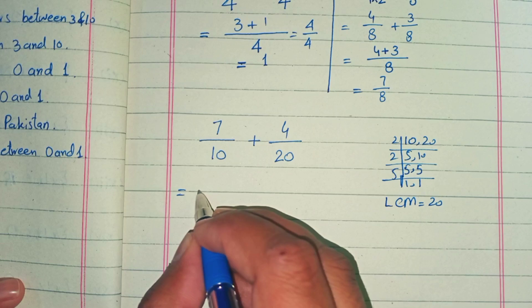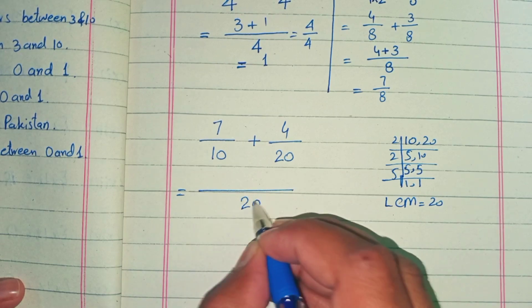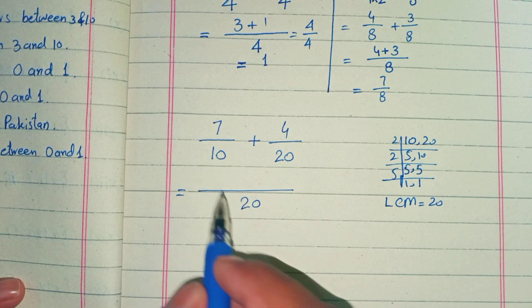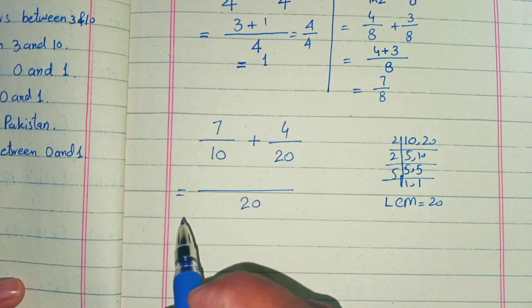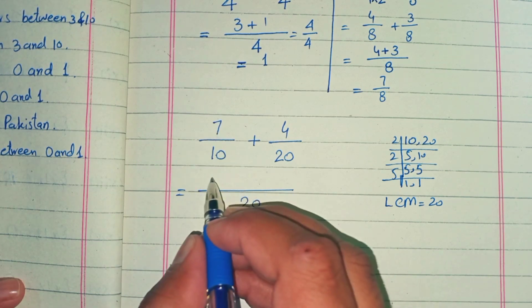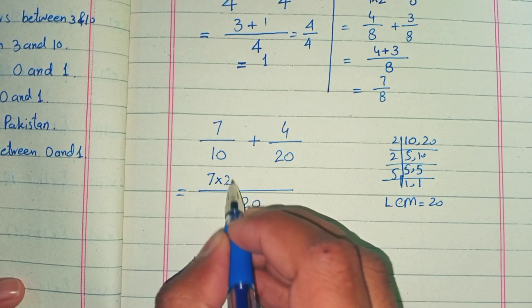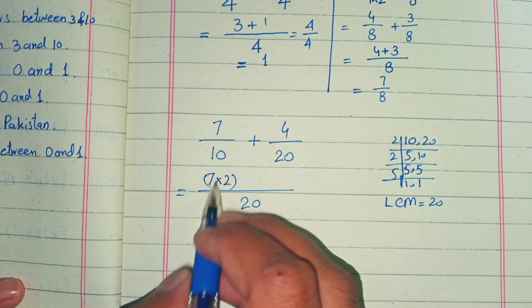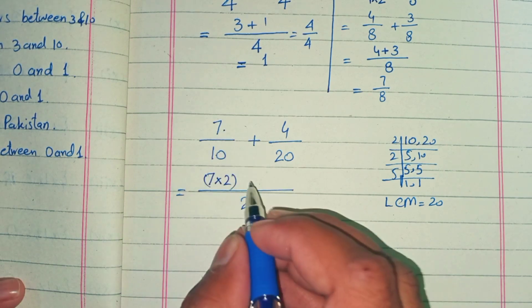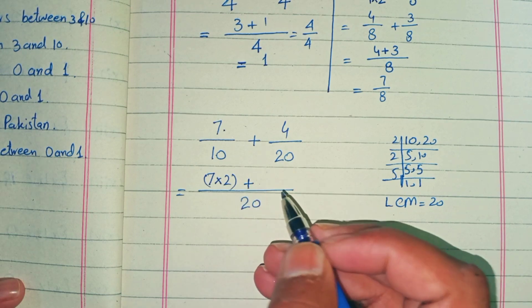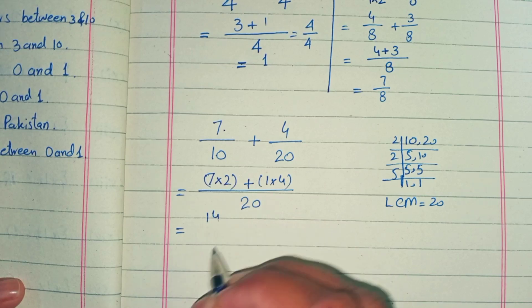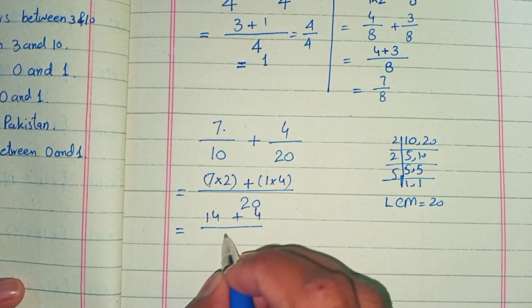We write 20 in the denominator. Now we divide this LCM by 10: 20 divided by 10 equals 2. We multiply this 2 by the numerator of the first fraction: 7 times 2 equals 14. Then divide 20 by 20, which equals 1, so 1 times 4 remains 4. So 7 times 2 is 14, plus 4, over 20.